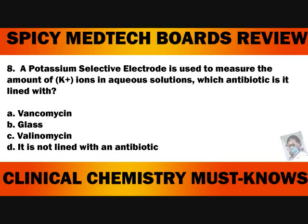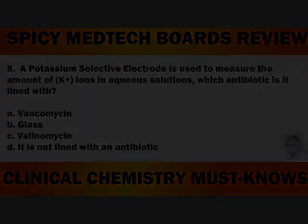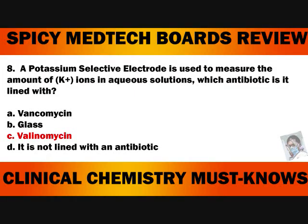Number 8. A potassium selective electrode is used to measure the amount of potassium ions in aqueous solutions. Which antibiotic is it lined with? A. Vancomycin. B. Glass. C. Valinomycin. Or D. It is not lined with an antibiotic. The answer to number 8 is letter C, Valinomycin.